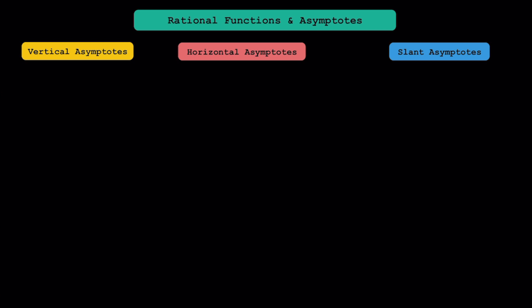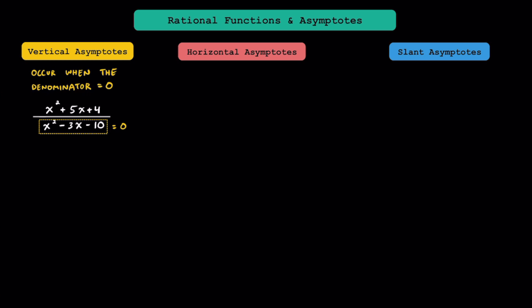Let's start by looking at vertical asymptotes. These are only going to occur when the denominator is equal to zero. Let's take a look at this rational expression here. To see what makes this denominator equal to zero, we can set it equal to zero and solve for x. Since it's a quadratic expression, we can factor the trinomial here into the quantity of x minus 5 times the quantity of x plus 2. The two values of x that are going to make this equal to zero are 5 and negative 2.